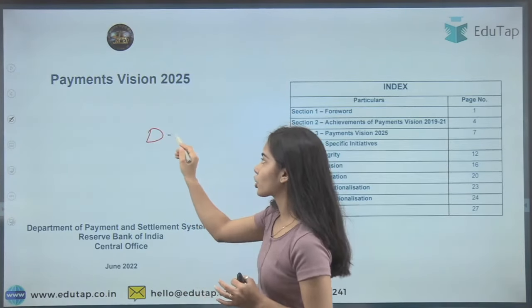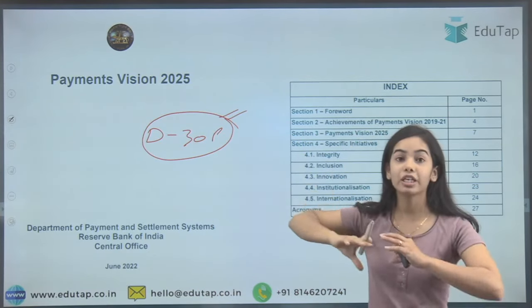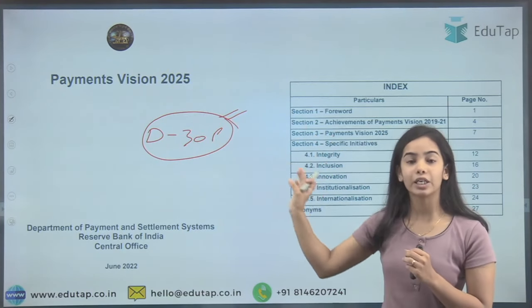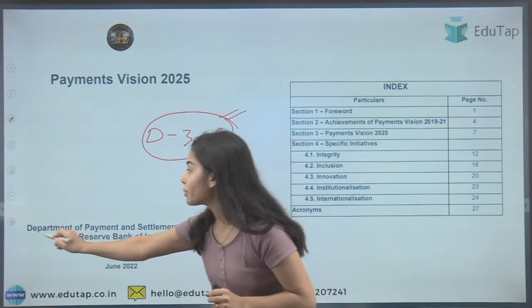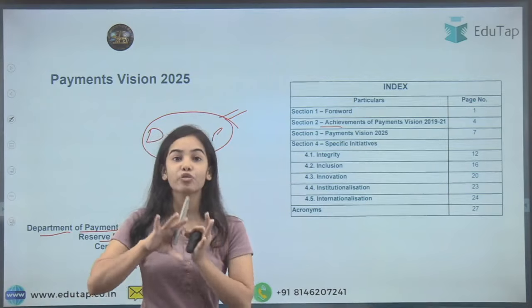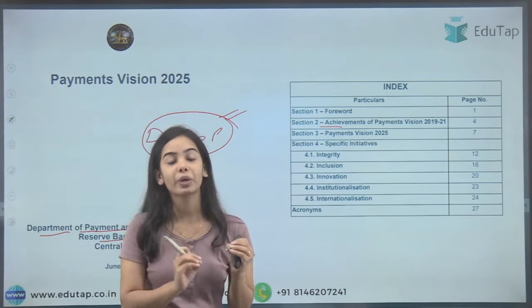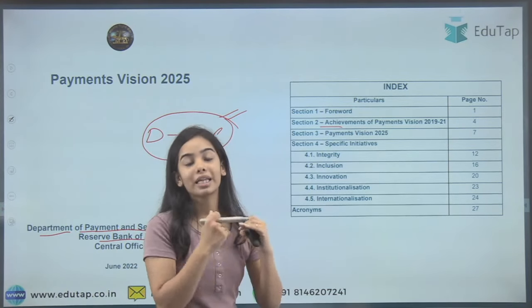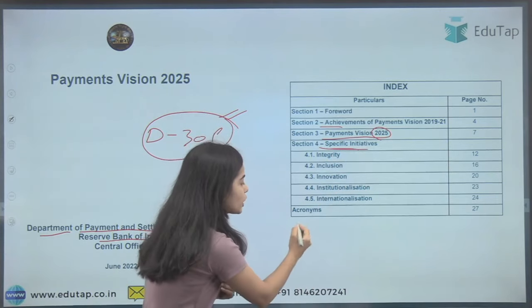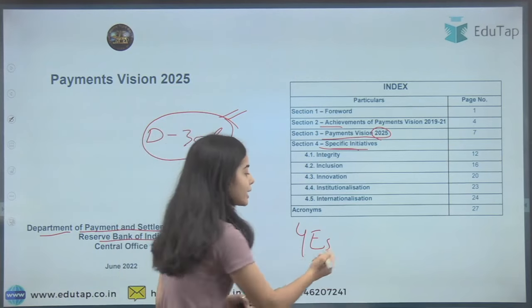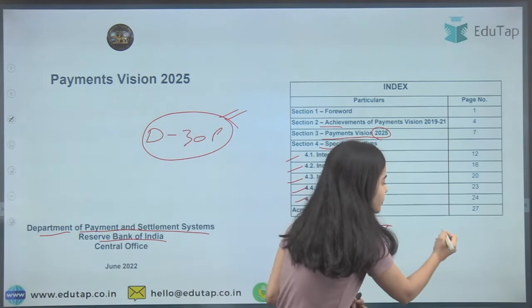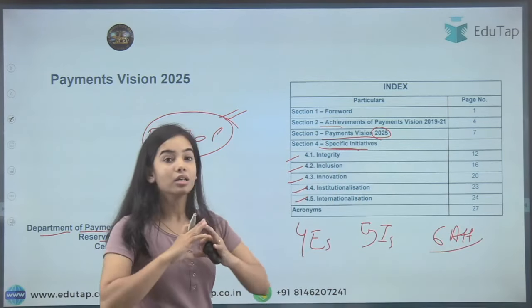This Payment Vision document is 30 pages long. I will give you a broad overview of what is important. It has been prepared by the Department of Payment and Settlement Systems, Reserve Bank of India. The index covers achievements of Payment Vision 2021, the plan for 2025, and specific initiatives. The core theme is the four E's, the goal posts are the five I's — Integrity, Inclusion, Innovation, Institutionalization, and Internationalization — and the attributes are the six attributes.